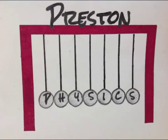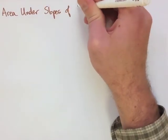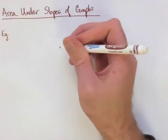Preston Physics, Grade 11, Kinematics, Note 10: Area Under Slopes. For this note, we're going to look at the area under the slope of a graph. We're going to look at two graphs: an acceleration-time graph and a velocity-time graph.